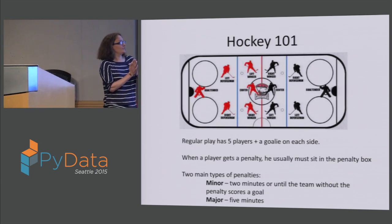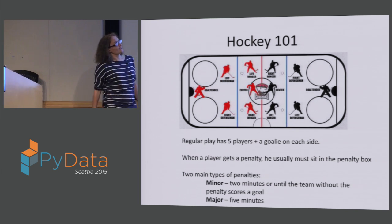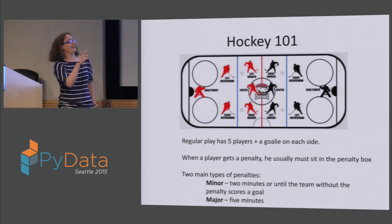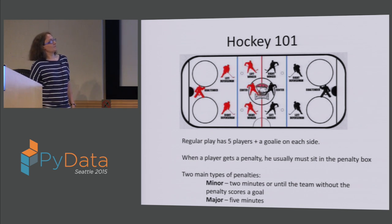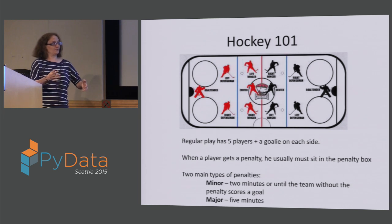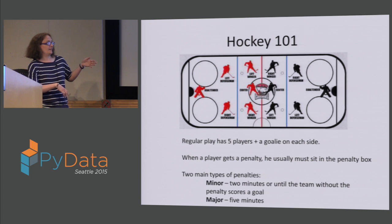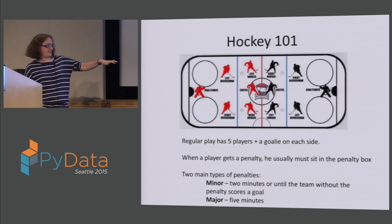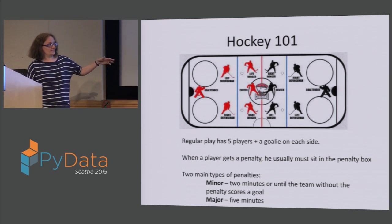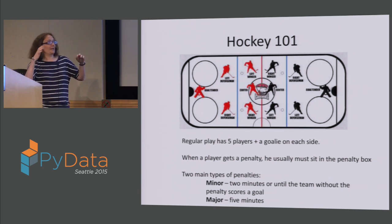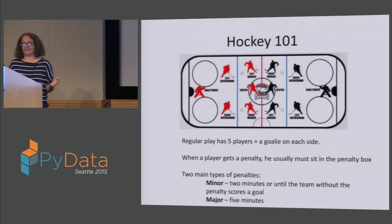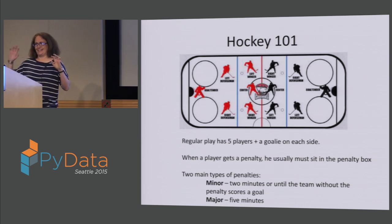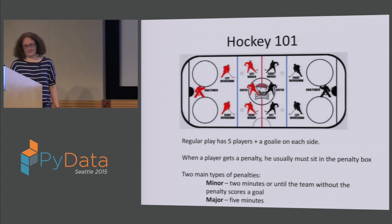Some hockey 101 in case you don't know anything about the game: there's a rink, there's five skaters per side plus a goalie. Regular play is five on five, but when a player gets a penalty — they break the rules — they have to go sit in the penalty box for about two or five minutes. For that whole time, their team is usually playing down a player, so you would think that would definitely have a negative impact on the team's performance.